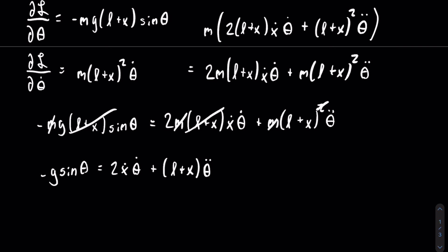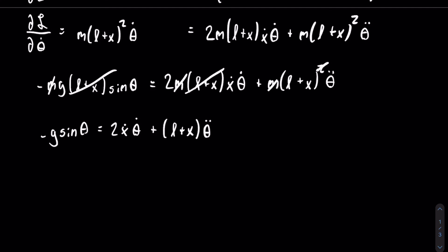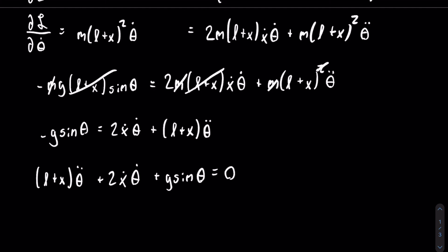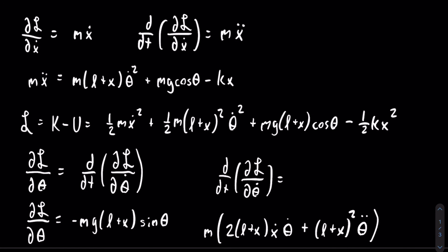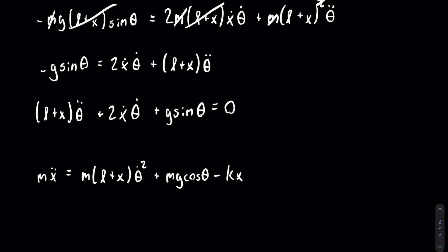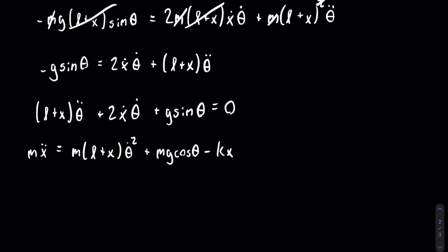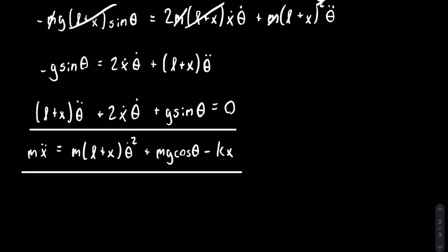We can then rewrite it in decreasing degree of derivative order: the quantity l plus x, times theta double dot, plus 2 x dot theta dot, plus g sine of theta, equals zero. Combining that with the previous equation, those are our two final equations. These two equations make up a system of differential equations that describe the motion of the system. Next video we will be using Lagrangian mechanics again to find the equations of motion for a double pendulum. Thank you for watching, bye.